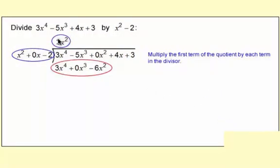Then you multiply this 3x² by the quotient, and you just go one term at a time, and you get 3x⁴ + 0x³ - 6x². You just multiply each one.